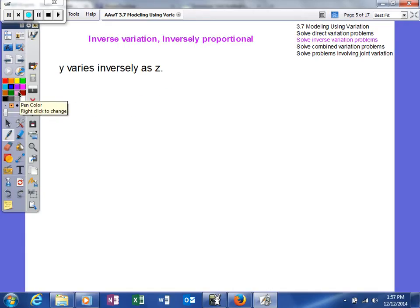This one says Y varies inversely as Z. So, if there's an inverse variation, as one increases, the other one's going to decrease. So, kind of keep that in mind. And the way it works is K will be in our numerator. If there's an inverse variation,